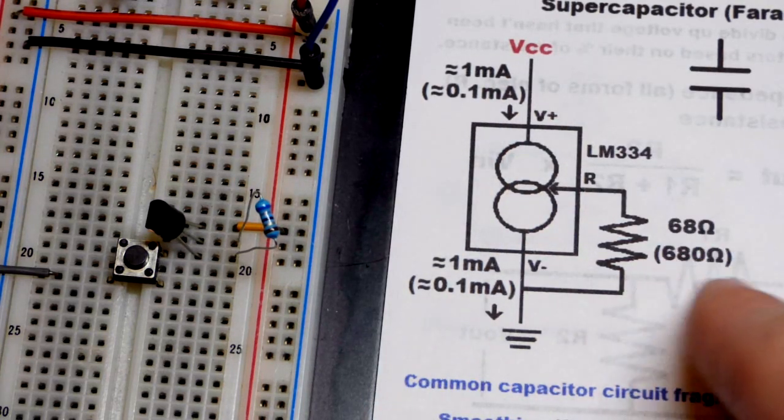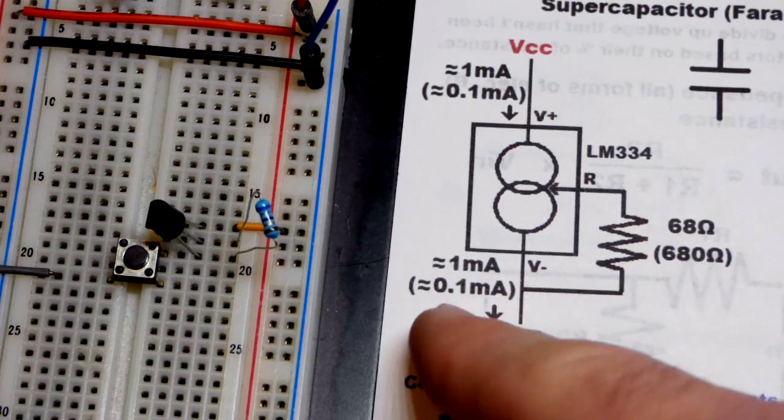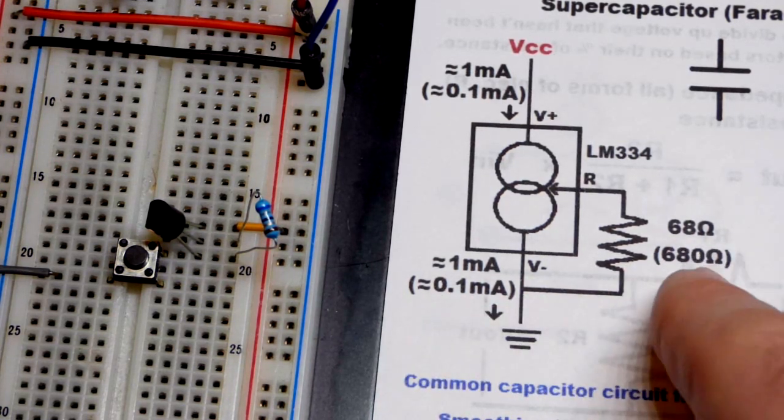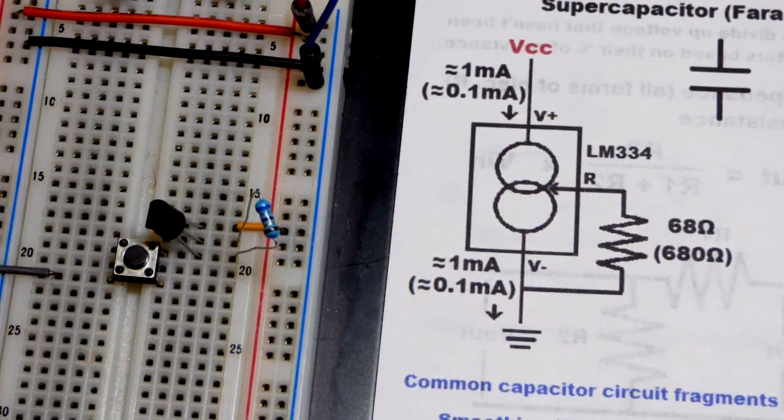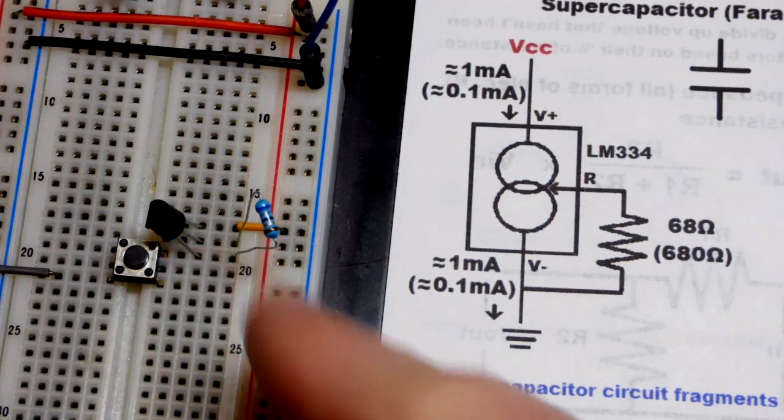And if we used a 6.8 ohm resistor we would get 10 milliamps which is the maximum current for this component.